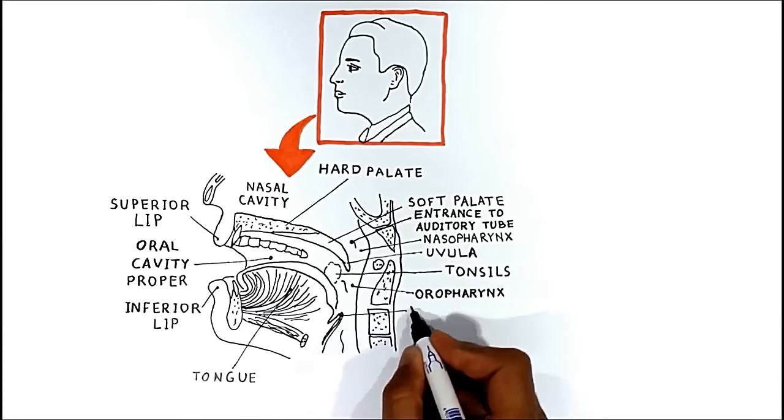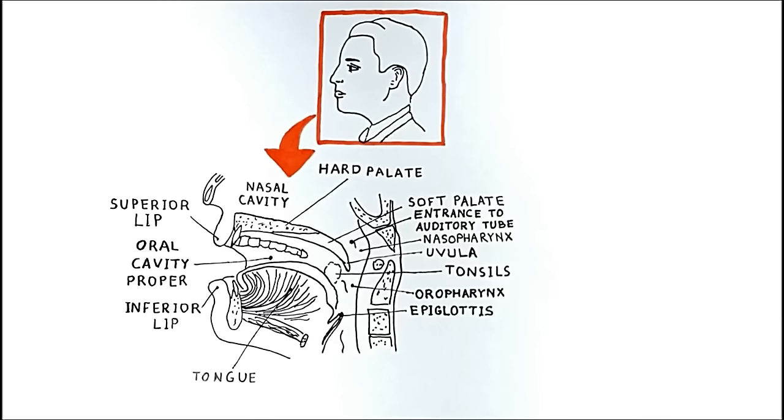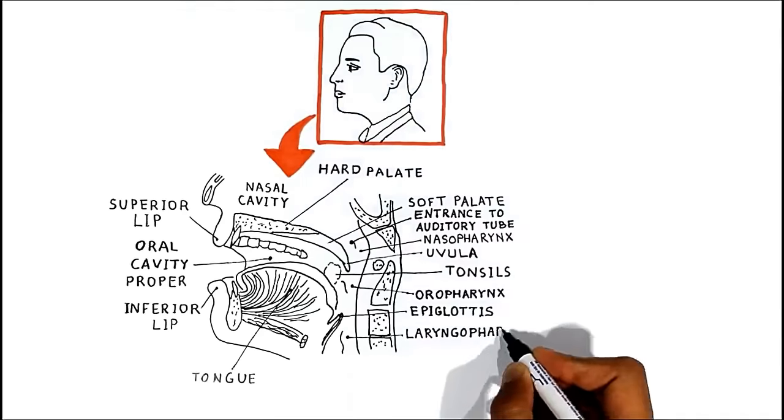Right here is your epiglottis, which closes the trachea when you eat some meal and prevents the bolus to enter to the respiratory passages. The oral pharynx further adjourns to the laryngopharynx.